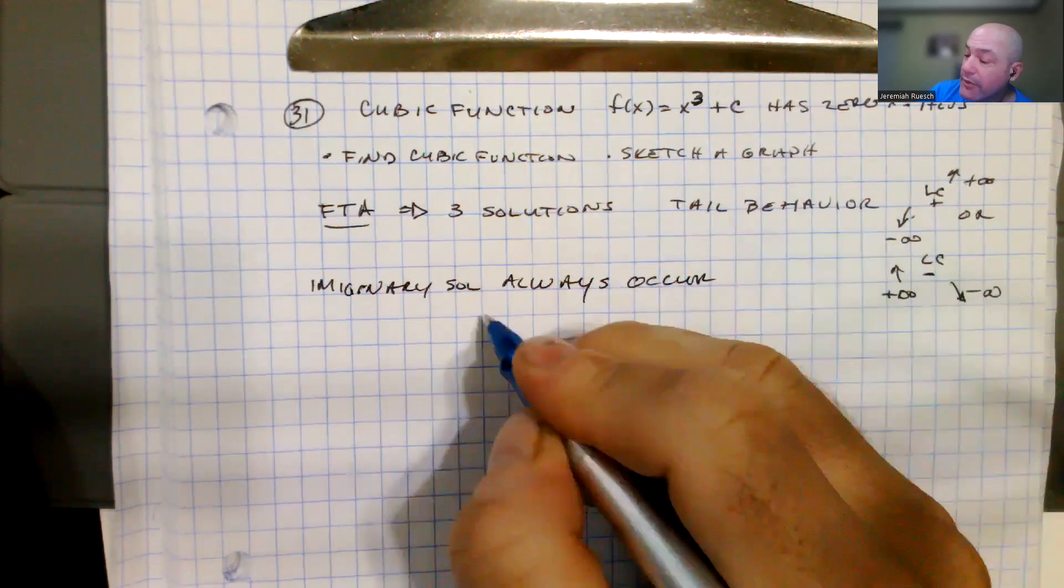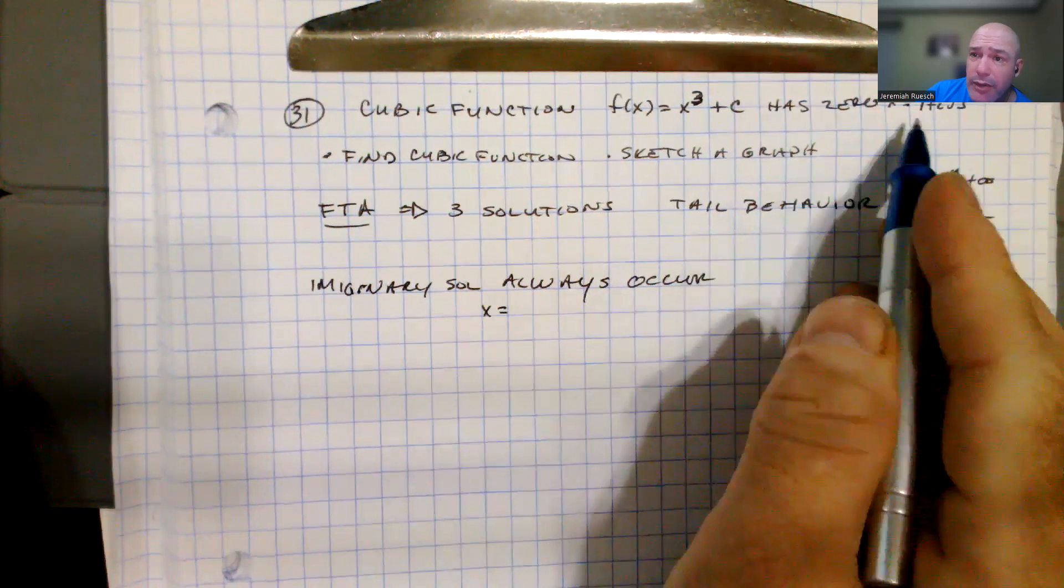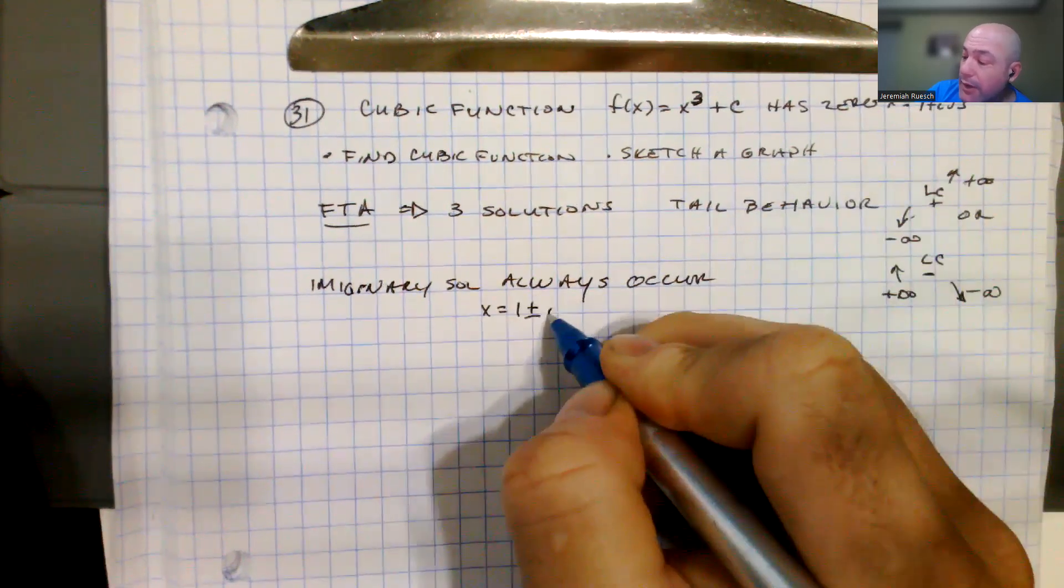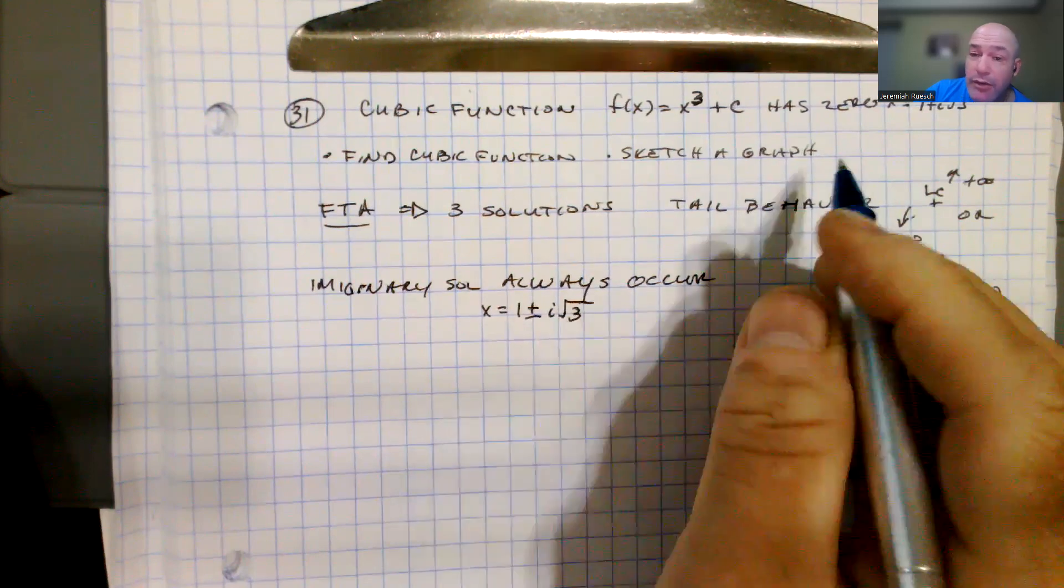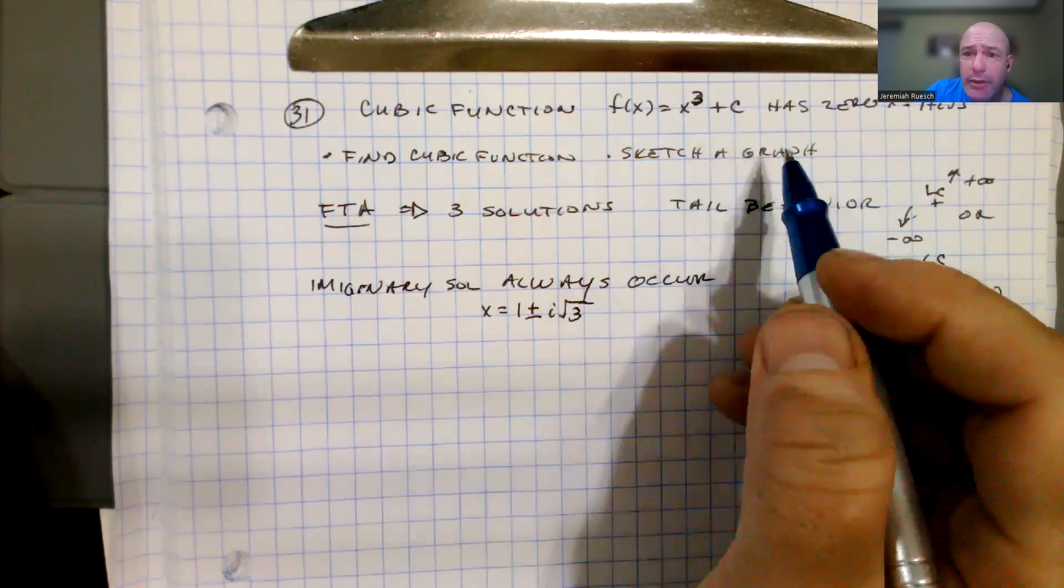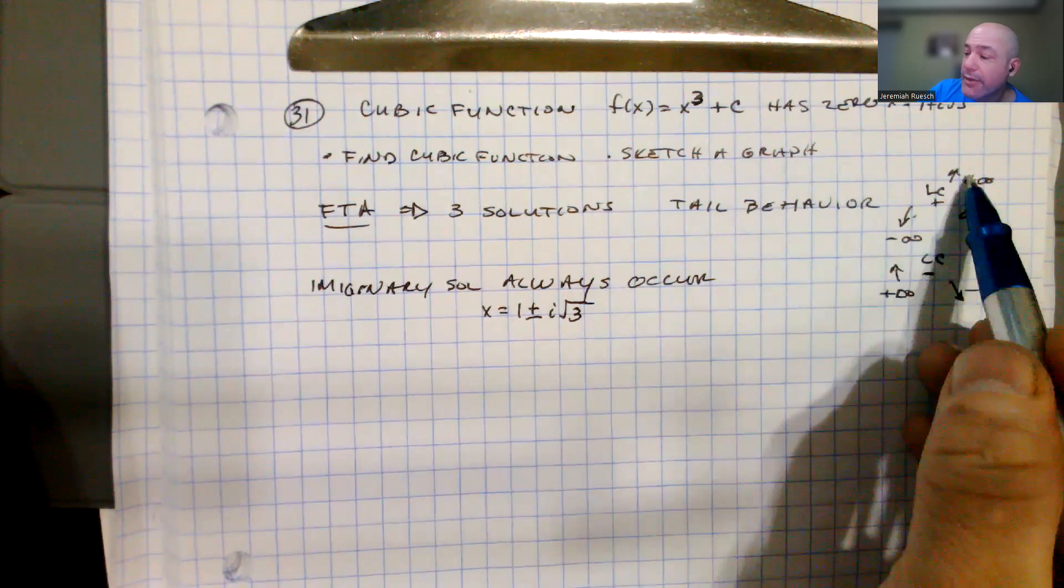Another thing to know is that imaginary solutions always occur in pairs. Specifically, they're conjugates. So we actually have two solutions. Even though they only gave us one, we know that x equals 1 plus or minus i square root of 3 are our two solutions. So the remaining solution, the one that we're looking for, is actually the only real solution.